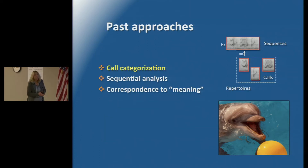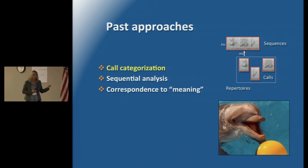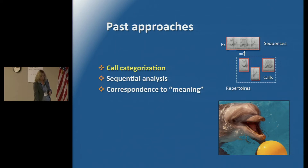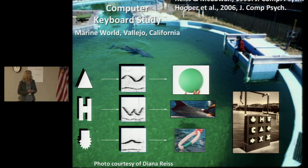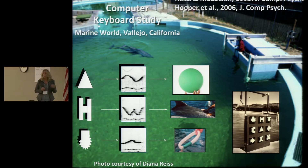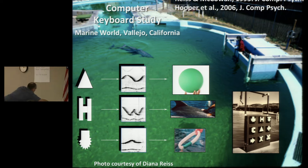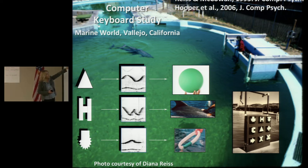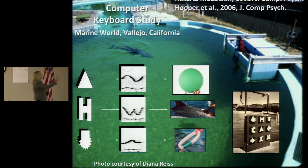I want to talk about past approaches from the mid to late 1990s — first, how we categorized signals in order to gain a greater understanding of how dolphins might use whistles in sequences. We based this on the perceptual system of the dolphins themselves. Back in the early 1990s, Diana Reese and I did a study in which we exposed dolphins to an underwater keyboard with three-dimensional keys that produced computer-generated whistles — like their whistles in some ways but not exactly — corresponding to a different object or activity such as rubbing.